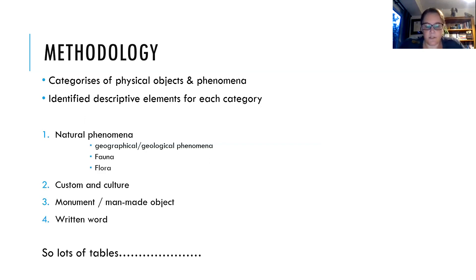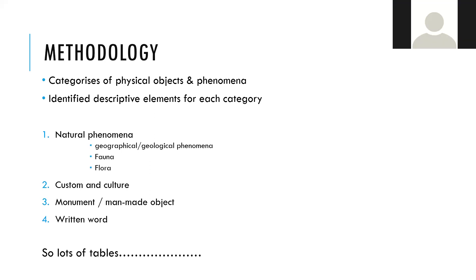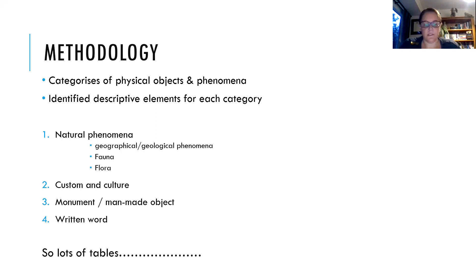By way of a quick summary of my methodology: the first task was to identify all the instances in the Egyptian Logos where Herodotus refers to physical objects or phenomena as part of his historical inquiry and describes them. The physical objects and phenomena identified were then grouped and defined into categories that bring together physical objects and phenomena described in similar ways. Each category then has its own set of descriptive elements — elements of their physical appearance which Herodotus uses in his descriptions. The categories are: natural phenomena, broken down into subcategories of geographical, geological phenomena, fauna, and flora.